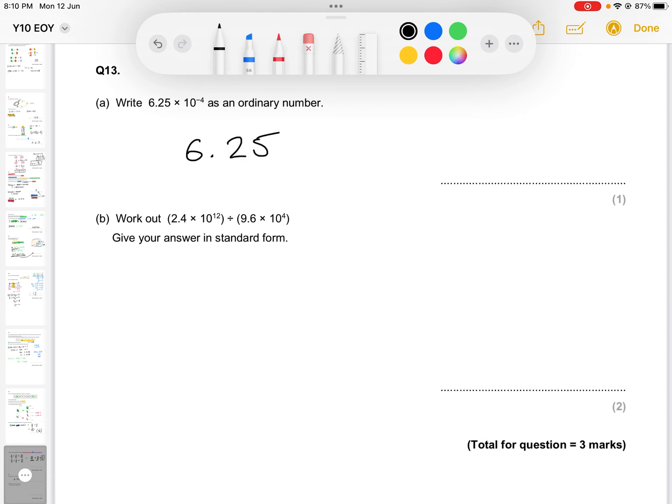When we have times 10 to the power of negative 4, we're dealing with a small number, and we have four place values that are jumping to make this number smaller. So this decimal place is going to move four places.